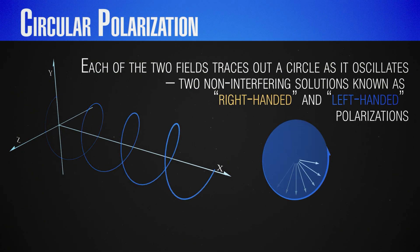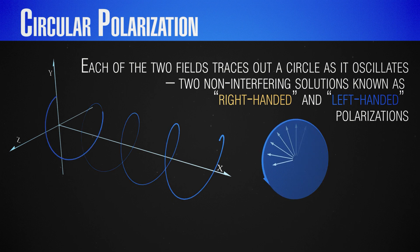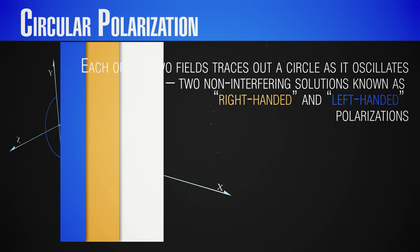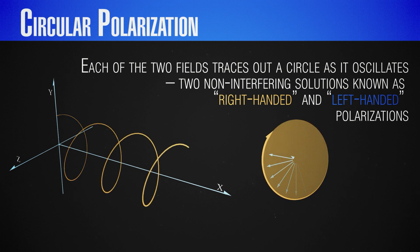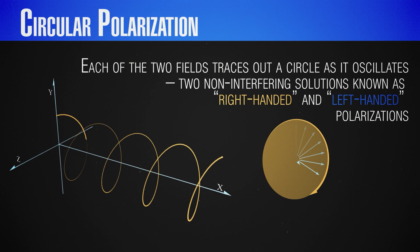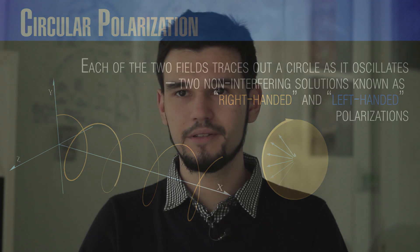Depending on the direction of rotation — clockwise or anticlockwise with respect to the direction of propagation — we define right-handed and left-handed circular polarization. The names come from the fact that if you take your right hand and your thumb points in the direction of motion, your fingers give the direction of rotation. Similarly, with your left hand and thumb pointing in the direction of motion, your fingers give the direction of rotation of left-handed polarized light.